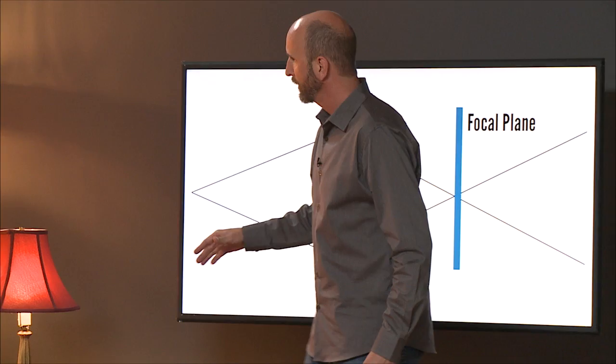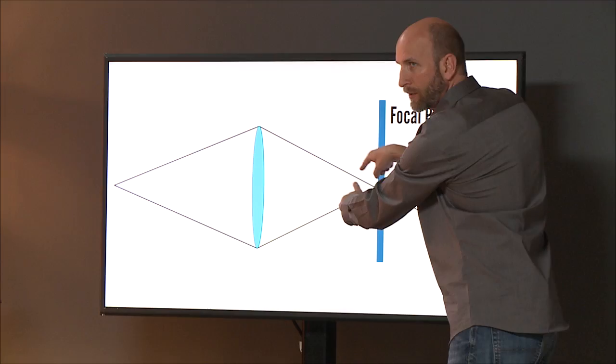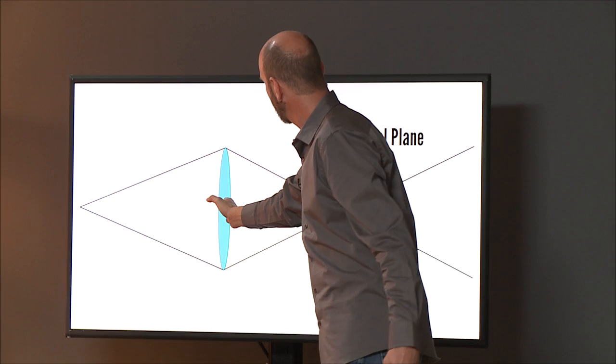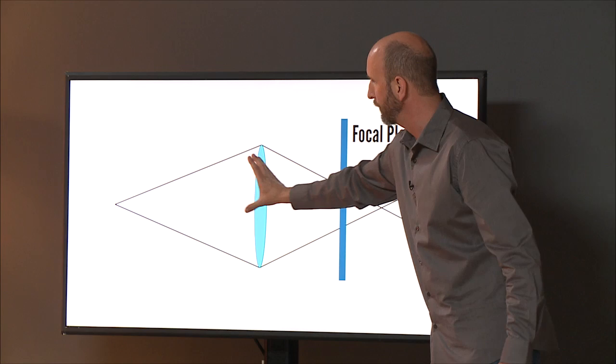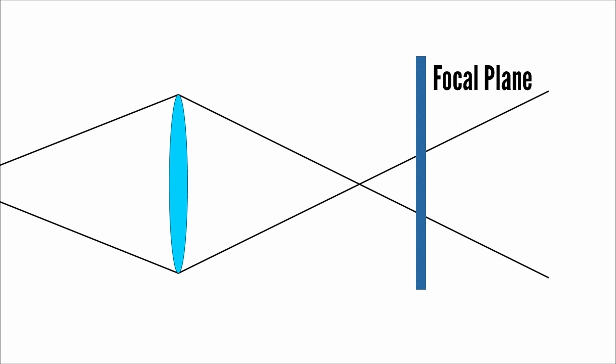And what happens is different point sources of light at different distances will have different focus points. So that's why when you're racking your focus and you're moving that little thing, you're moving your lens back and forth. And so what happens is if you move it back, now this isn't focused because we've moved our lens, the focus is back here. Or if we move it forward, it's up here. And so that's how we can choose what's in focus.